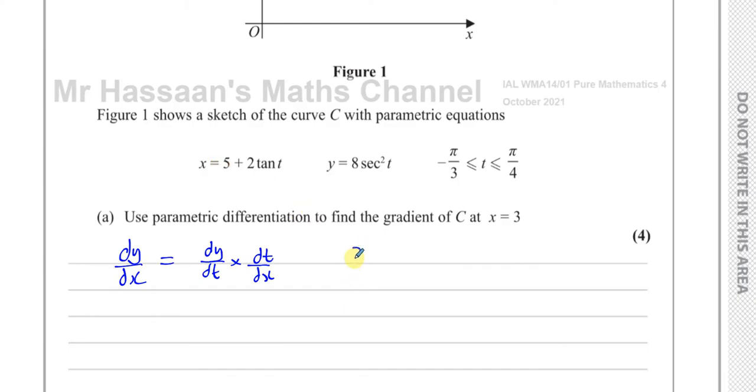So if we start off with x equals 5 plus 2 tan t, and we find dx dt, then you differentiate this with respect to t. 5 will become 0, 2 tan t, the differential of tan of something is secant squared of the same thing. This becomes 2 times the secant squared of t.